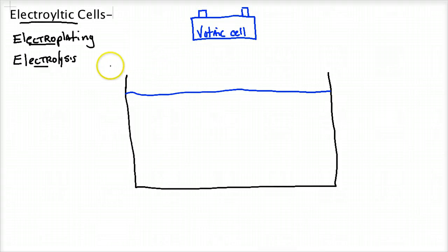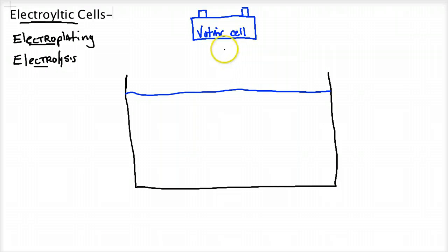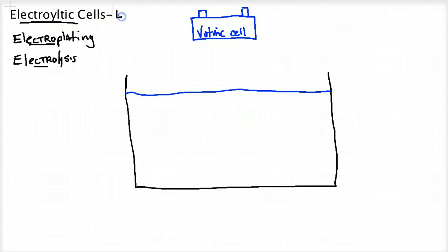I'm going to show you both, and they have their basics from a voltaic cell. So if you learned how a voltaic cell worked, there are going to be some differences. Obviously, the first one is this requires energy. Electrolytic cells are more like an endothermic process, whereas the voltaic or galvanic cells were an exothermic process — they gave off energy spontaneously. These require energy.